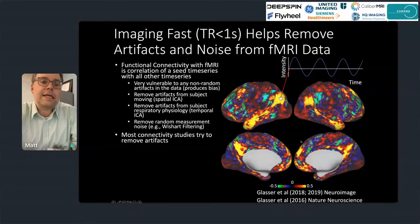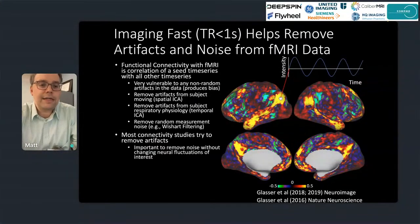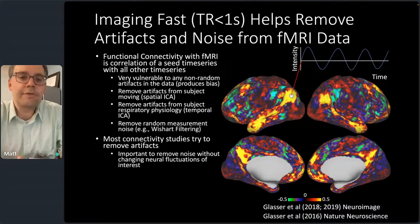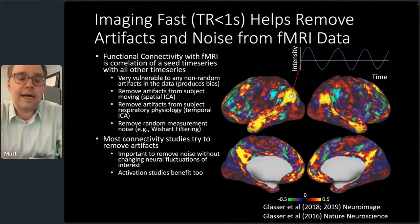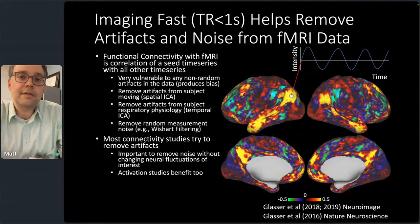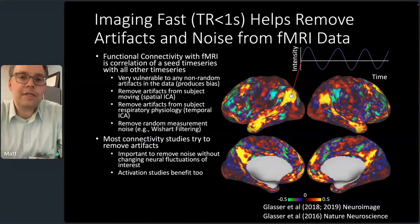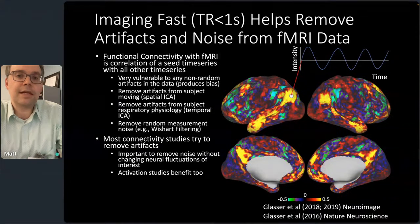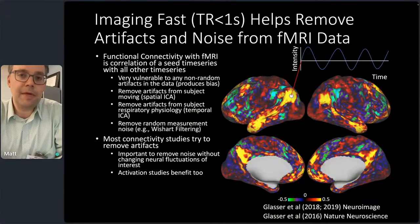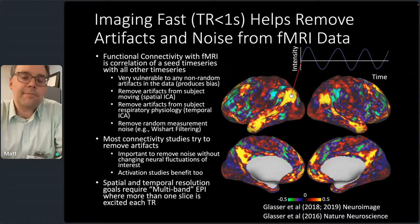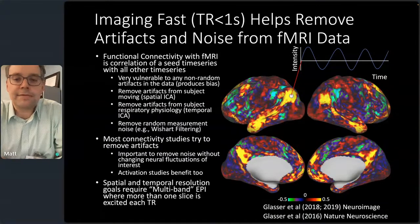Most connectivity studies try to remove artifacts, but we really want to do this selectively — removing noise without changing the neural fluctuations of interest. It turns out activation studies really benefit from this too: removing structured noise makes statistics more significant and removes false positive activations arising from correlation between head motion and the task, or respiration and the task — things that are quite common and maybe underappreciated. To have this high spatial and temporal resolution MRI, we really need multiband EPI where we're acquiring more than one slice per TR.